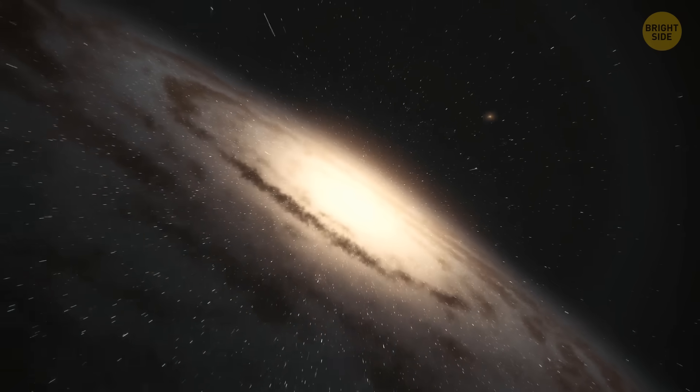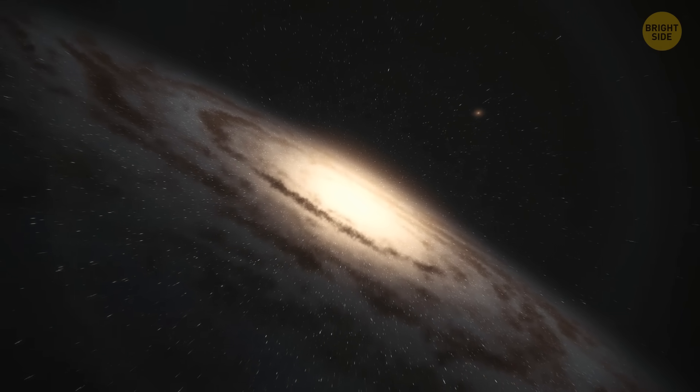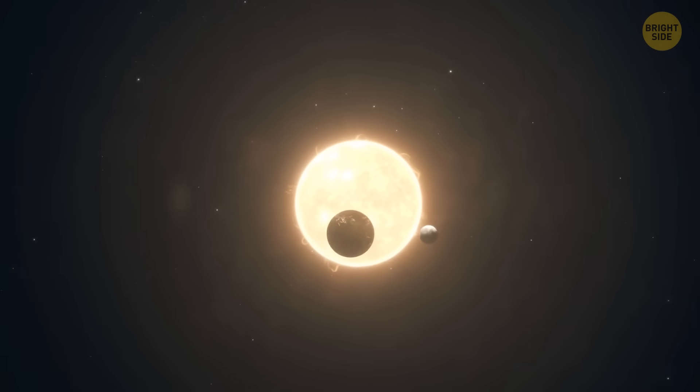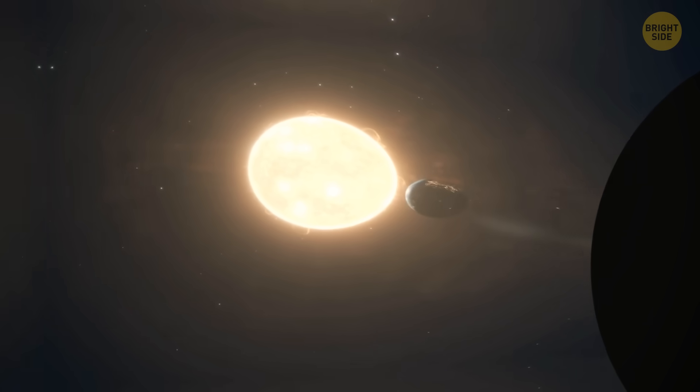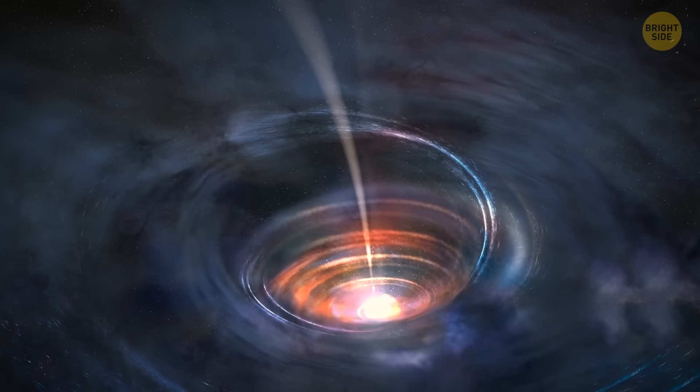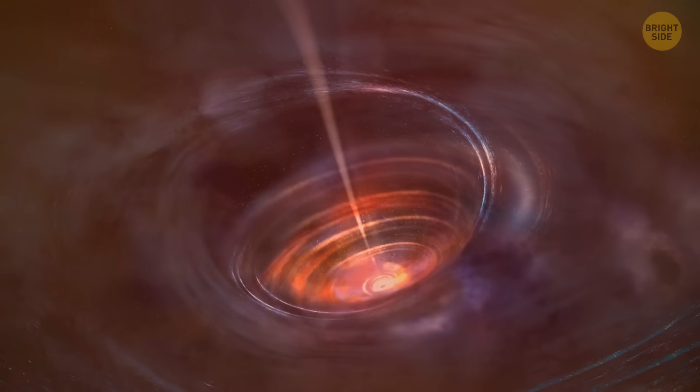Most supermassive black holes are located in the centers of galaxies. You might think that our galaxies orbit around them as we do around the sun, and that one day we will inevitably all be dragged inside it. But don't worry, that's not the case. Although these guys are incredibly massive, they're not very large in diameter. They can't swallow entire galaxies.